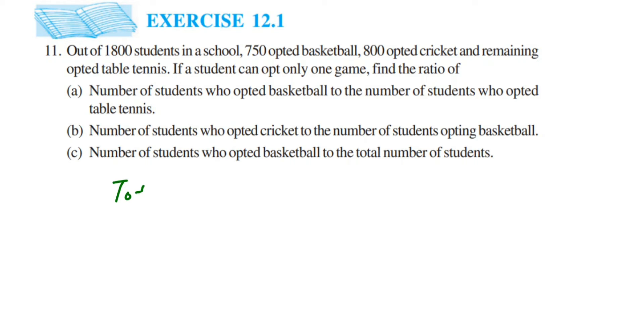In this, out of this 1800, the students who opted for basketball is 750 and the students who opted for cricket is 800. So let's add them, so this will become 1550. So this many students opted for both basketball and cricket.